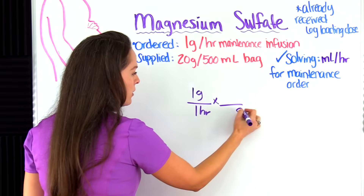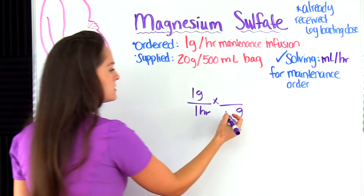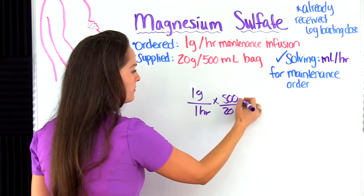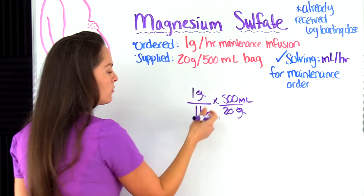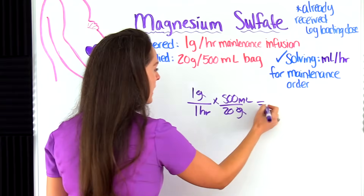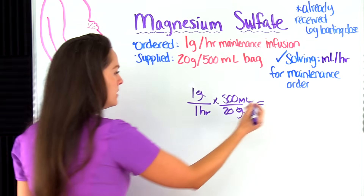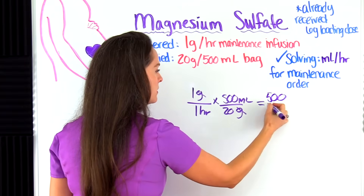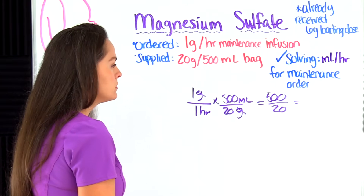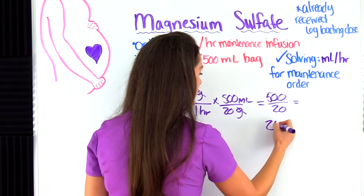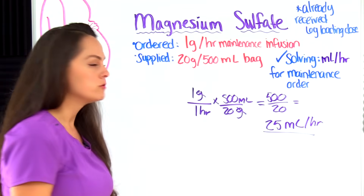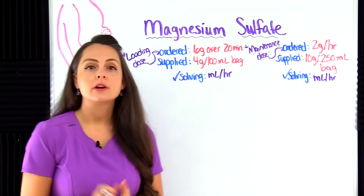To set this problem up, we start with what was ordered: one gram over one hour. Our goal is milliliters per hour, so we multiply and bring grams over, plugging in what we're supplied with — 20 grams in 500 mL — and that cancels out grams. We have milliliters per hour left, so we're ready to solve. We get 500 on top and 20 on the bottom; 500 divided by 20 gives us 25 milliliters per hour for the maintenance infusion rate.